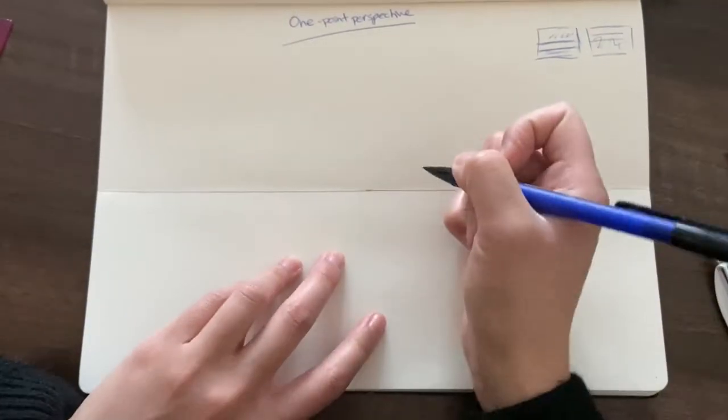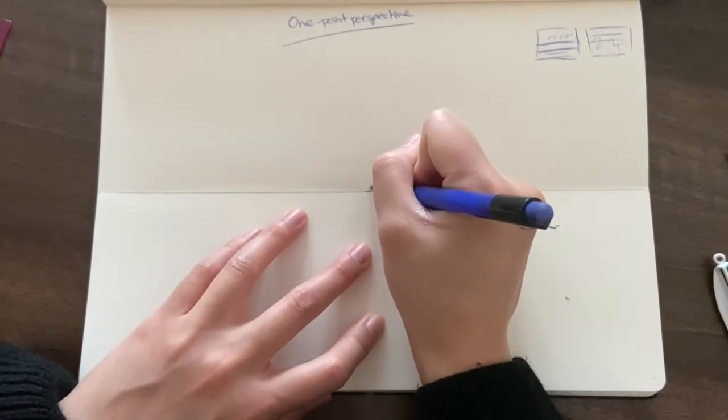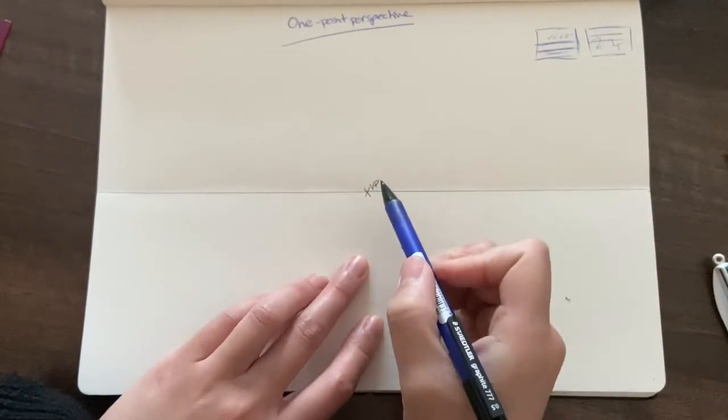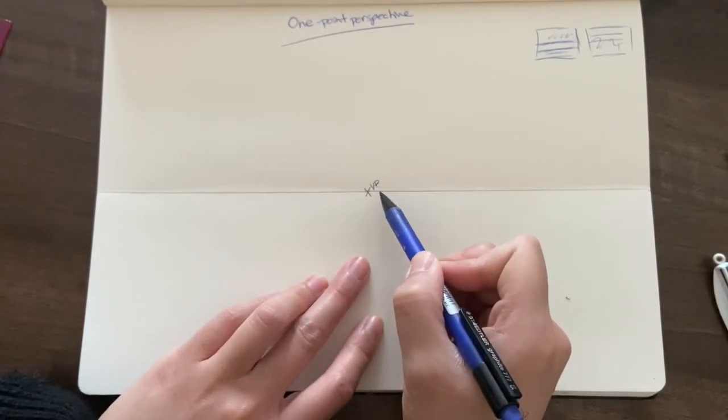What you're going to do is add the vanishing point. So I'm going to draw an X here, and I'm going to call it VP, and that stands for vanishing point.